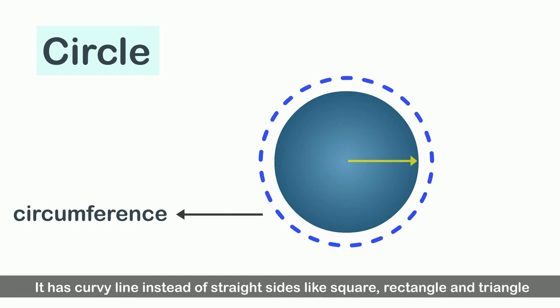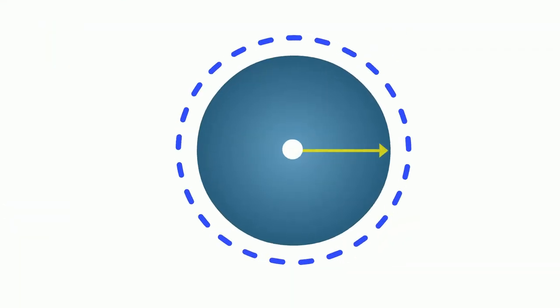The length from the center of the circle to the circumference is called the radius, and it is always equal no matter in which direction you measure it. For example, if you measure the line here it is four centimeters, in this direction it is also four centimeters, and even in this direction it is four centimeters.